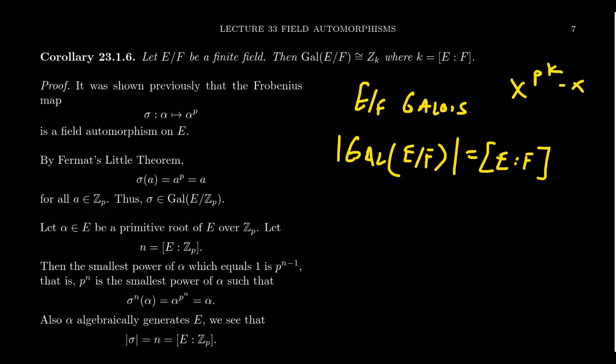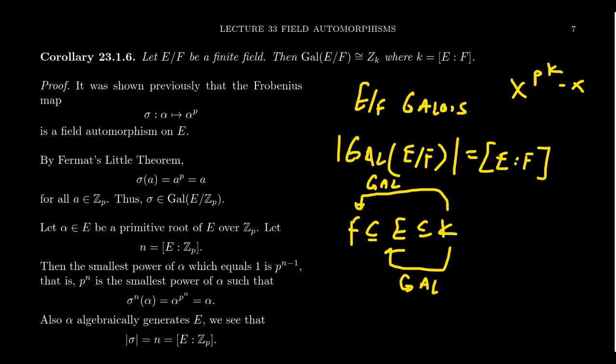Whenever you have a situation like the following, F is contained inside of E, which is contained inside of K. If K is Galois over F, it's going to likewise be Galois over intermediate field as well. For finite fields, we've already proven that essentially every finite field is going to be a Galois extension, a finite Galois extension of Z_P. So it doesn't matter which finite fields we have here, we have a Galois extension in that situation.